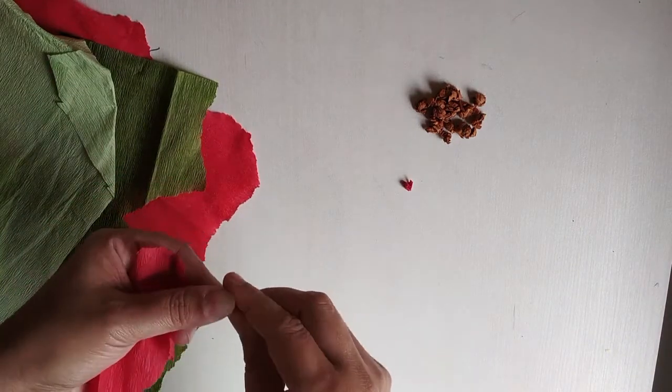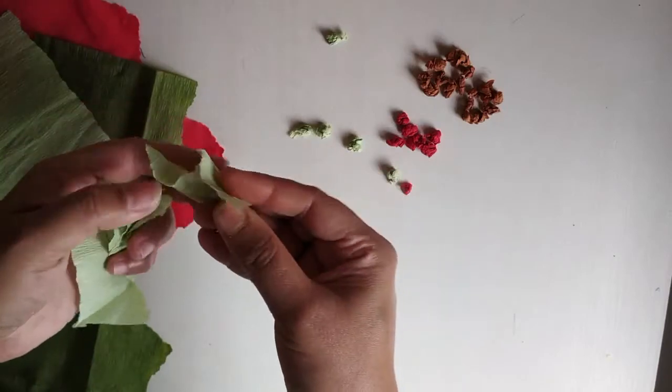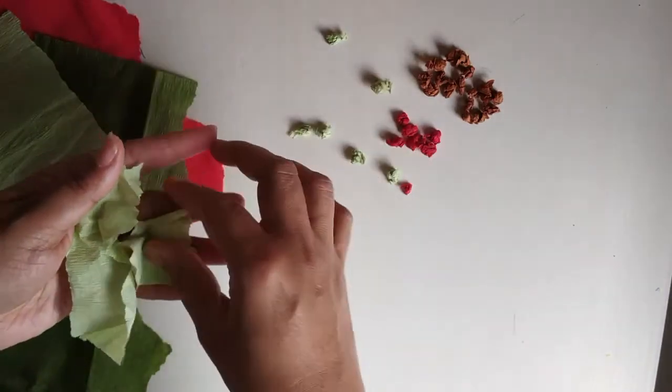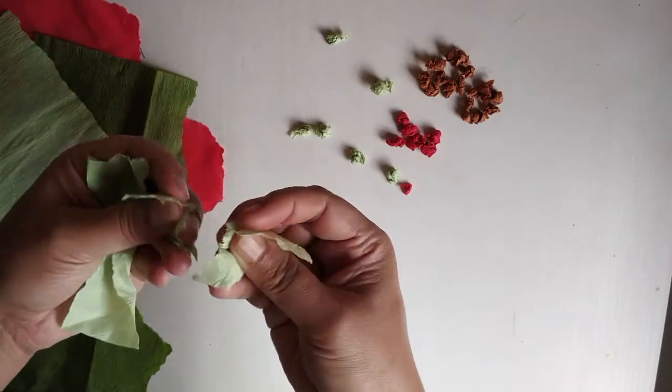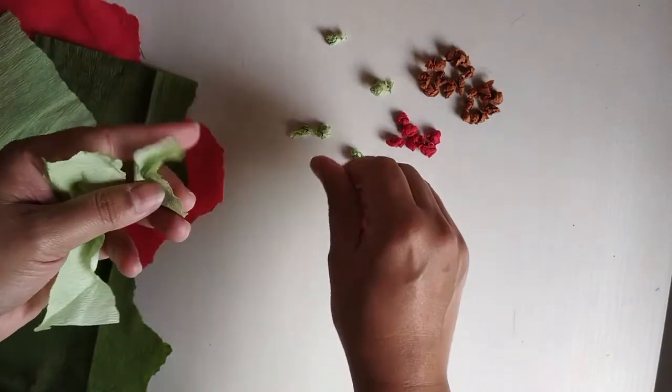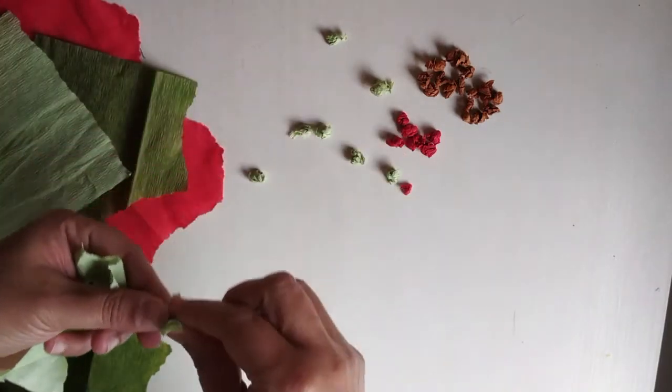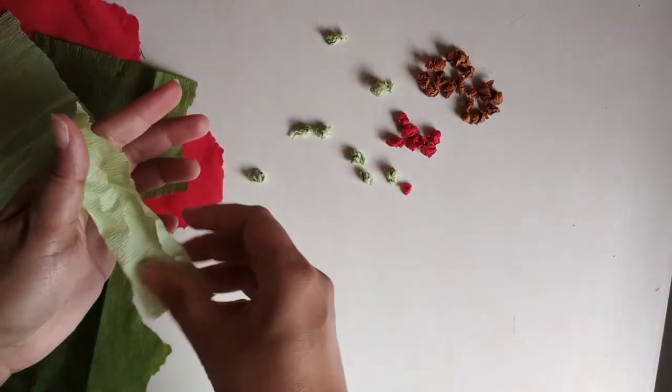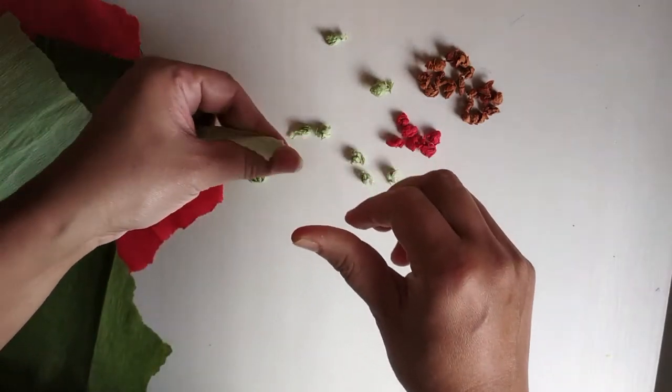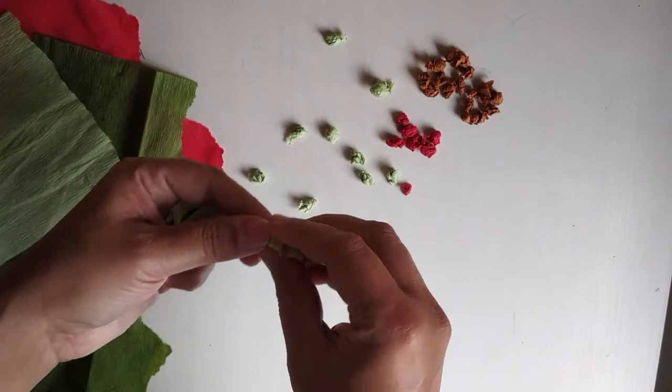If you do not have crepe papers, you can use even newspapers. But if you're using newspaper or any color paper, if your hand becomes dirty, wash with the soap very neatly. Your hand should be very neat after washing.